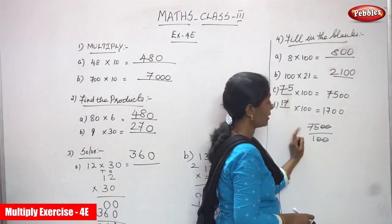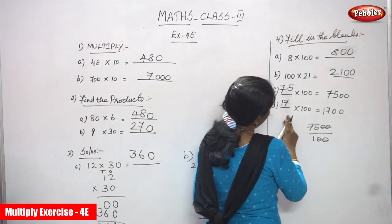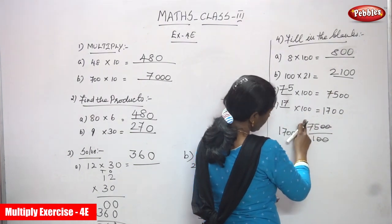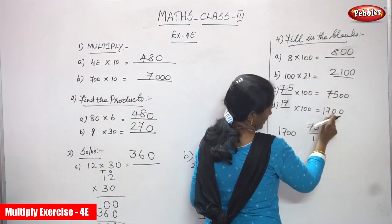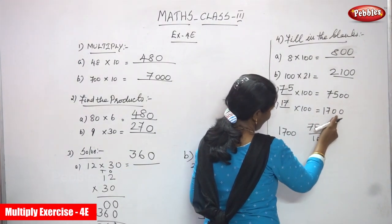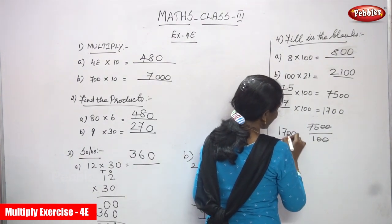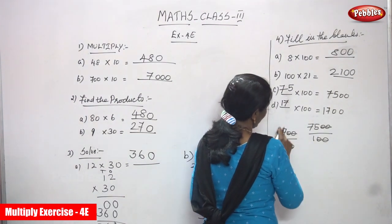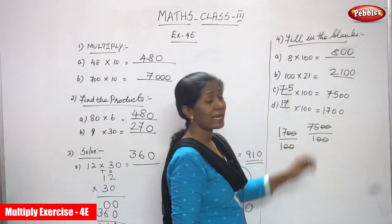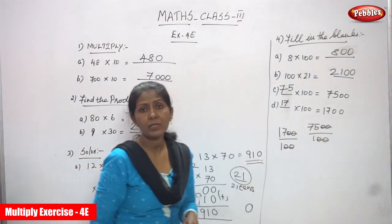That is the division method — you can choose any one method. 1700 divided by 100: cancel the two zeros, 17 divided by 1 gives 17. So 17 is the right answer. You can fill in the blank using any method. I think you understand all the concepts very clearly.